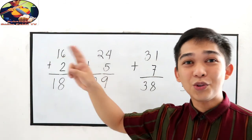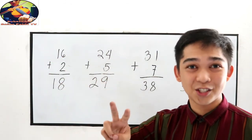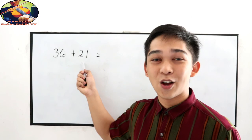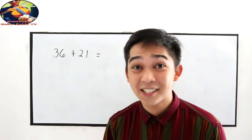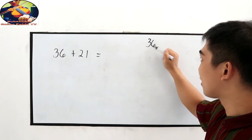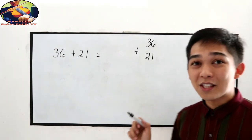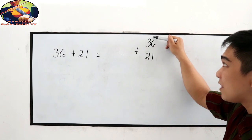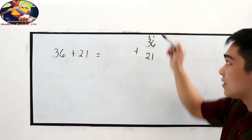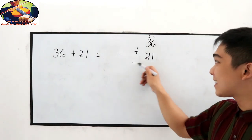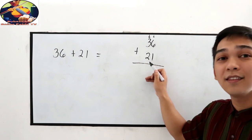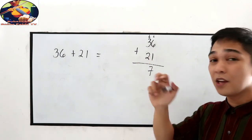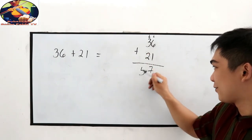Now let us proceed to two-digit number plus another two-digit number. Let's say we have 36 plus 21. I want to solve that vertically. Notice we have a two-digit number and another two-digit number, so ones place must be aligned to ones place, and tens place to tens place. Let us add: 6 plus 1 is 7. Then 3 plus 2: 4, 5. That is 5. So the answer is 57.